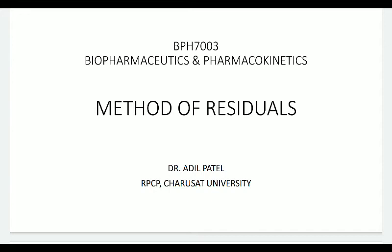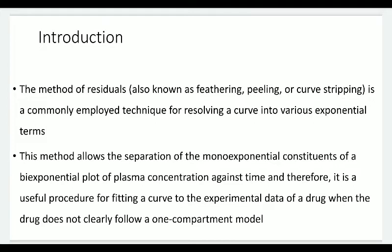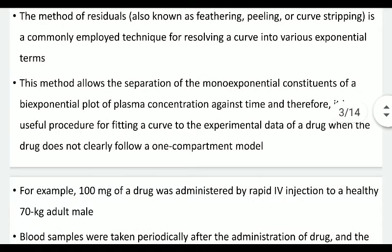In today's lecture I am going to discuss about the method of residual. This is a procedure where we can calculate various pharmacokinetic parameters after presuming a two-compartment open model study. The method of residual, also known as feathering, peeling, or curve stripping, is a commonly employed technique for resolving a curve into various exponential terms. It allows separation of the mono-exponential constituents of a bi-exponential plot of plasma concentration against time, making it useful for fitting a curve to experimental data when a drug does not clearly follow a one-compartment model.